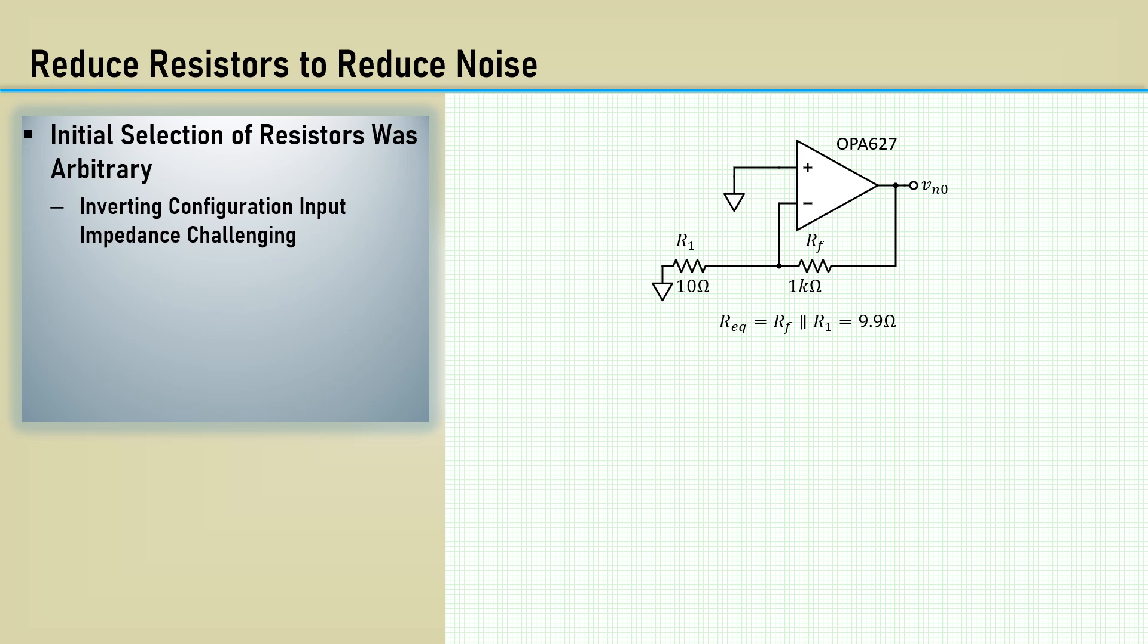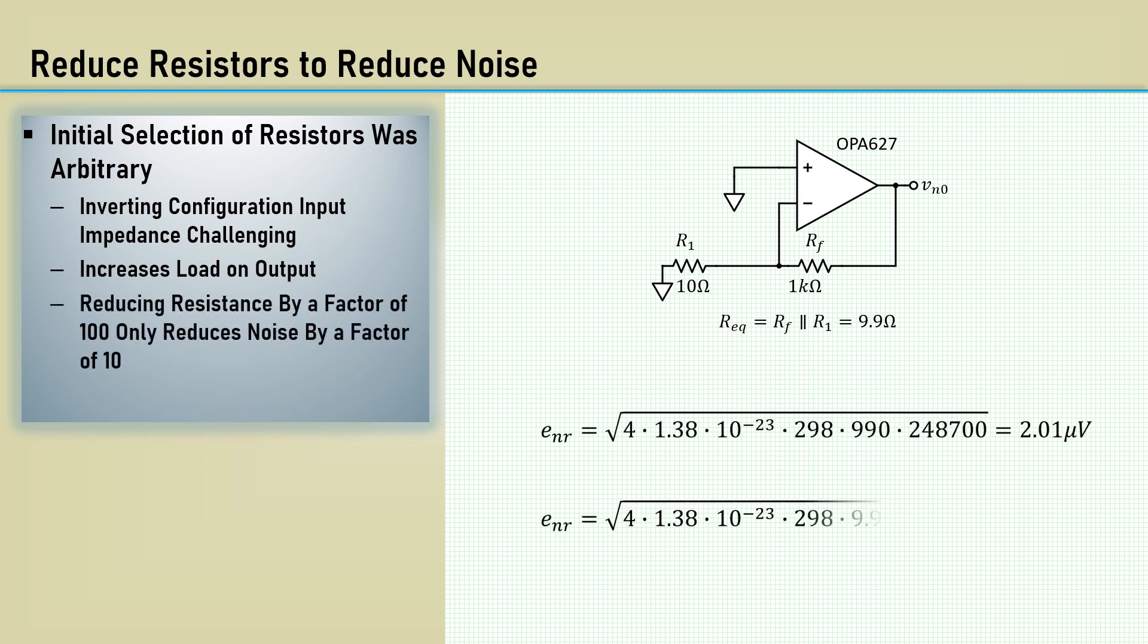Lower resistor values will increase the load on the output, which can affect slew rate and large signal gain. Reducing the resistors by a factor of 100 only yields a reduction of resistor noise by a factor of 10, being inside the radical.